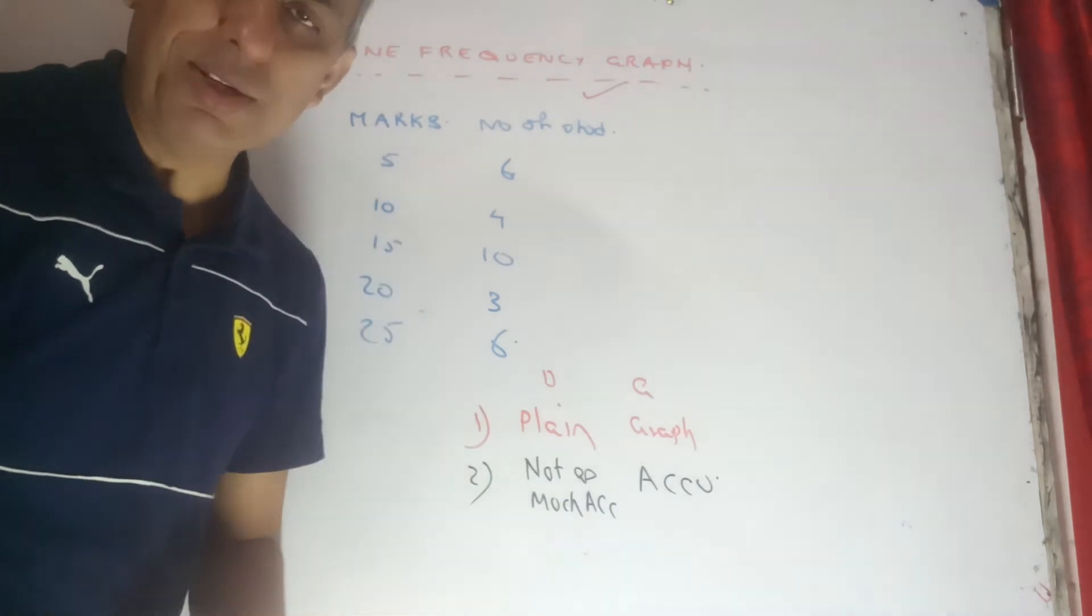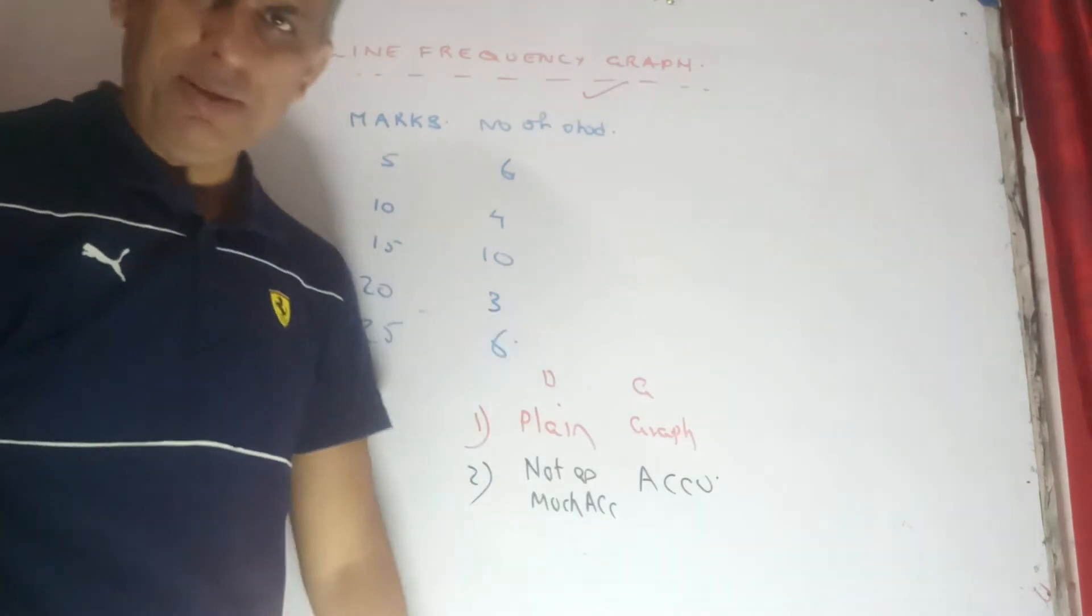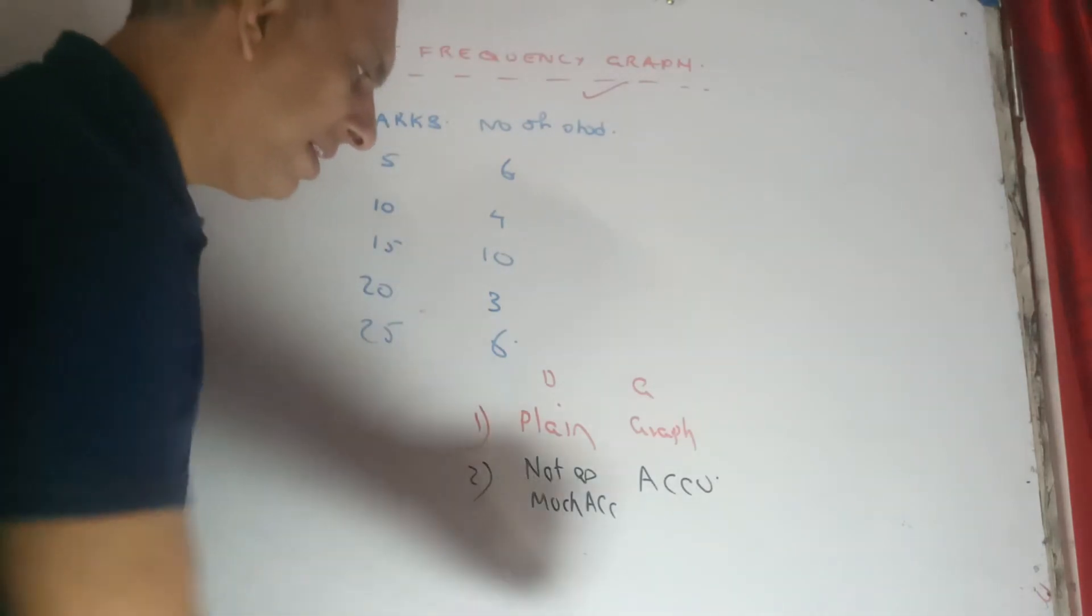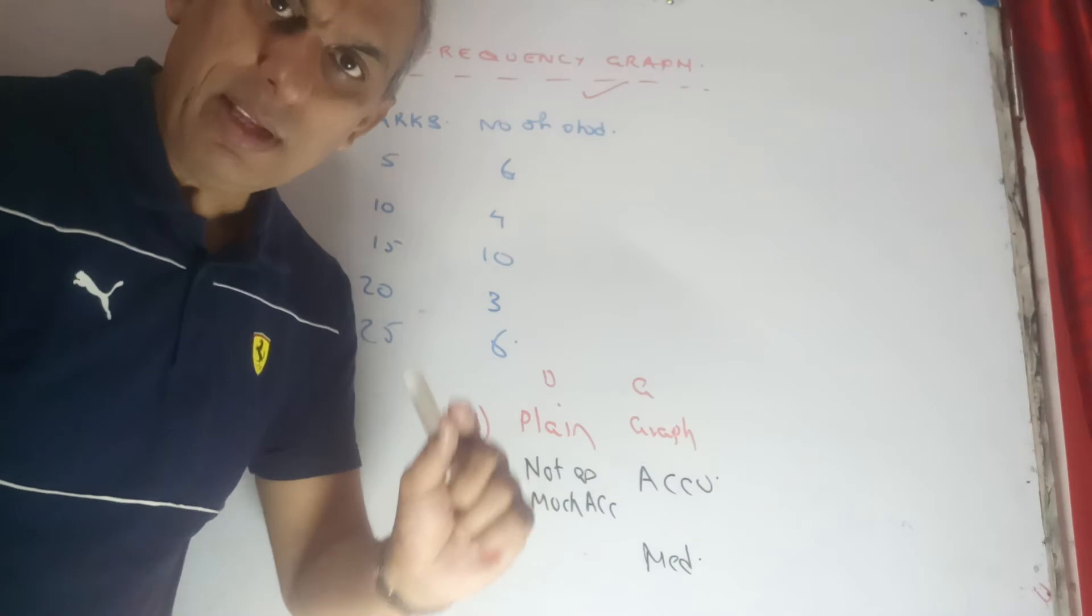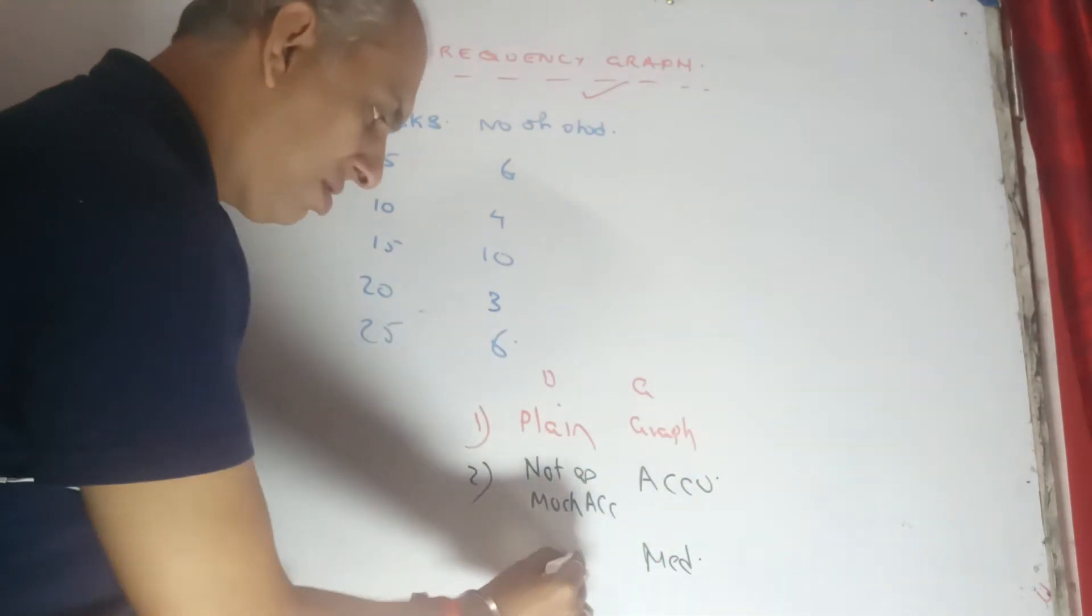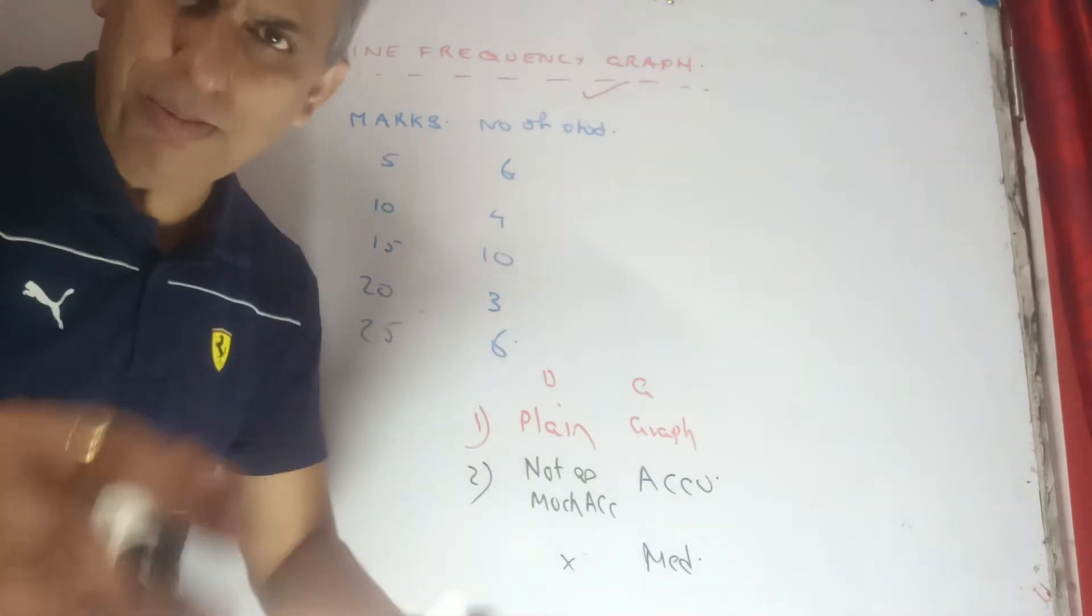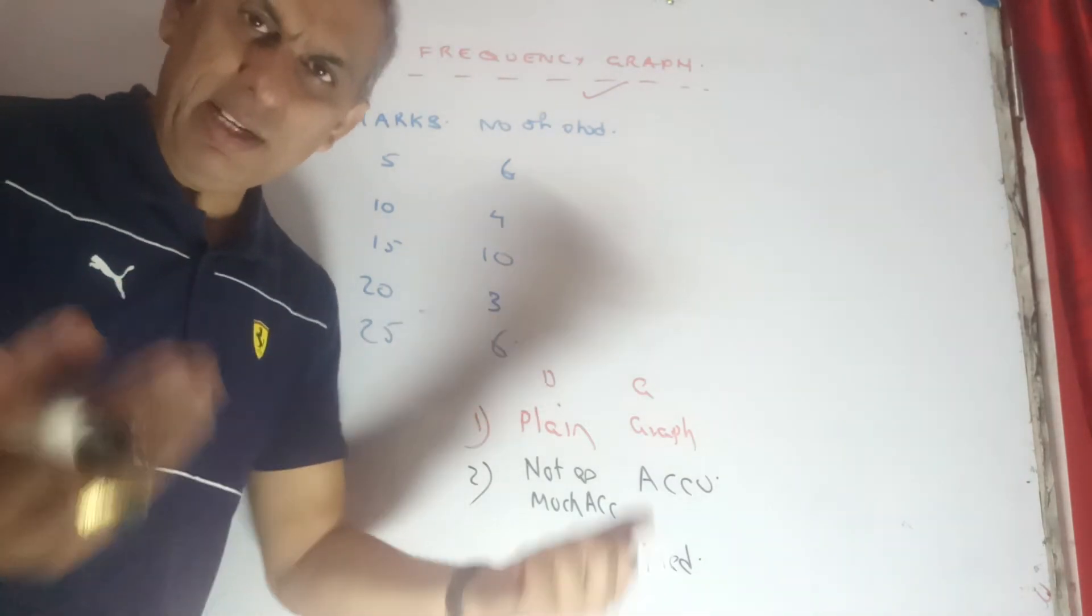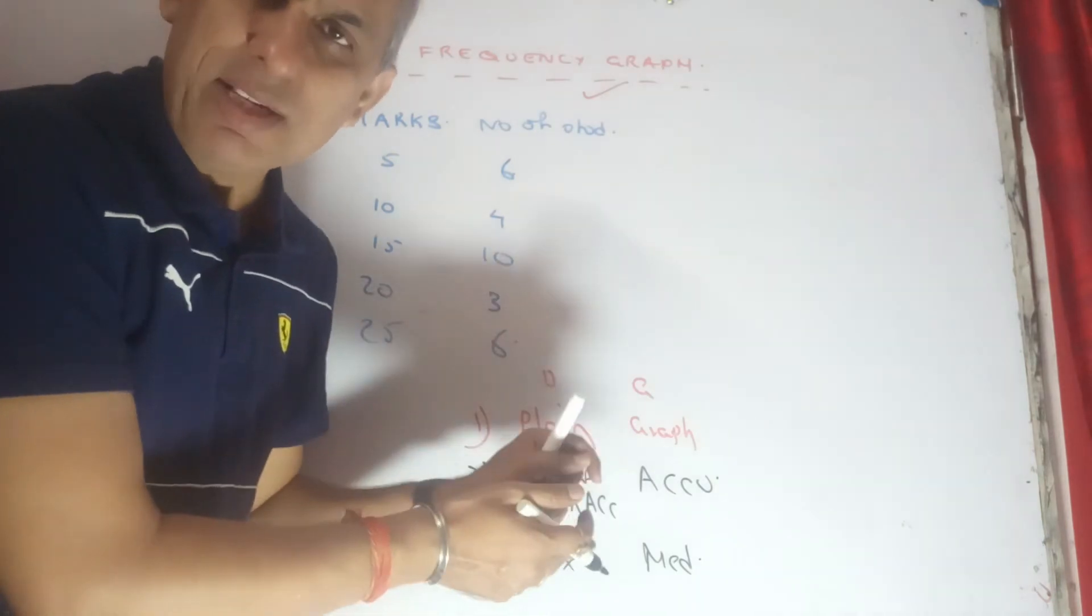And one more thing: certain values, let's say for example median, can be found even through graphs, which is not the case when diagrams are concerned. I hope all of you are understanding it. Mathematically there can be some other differences also, but let's stick to what economics as the need of the hour is.